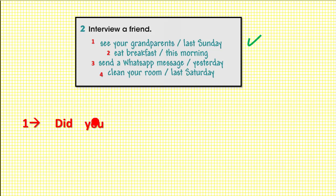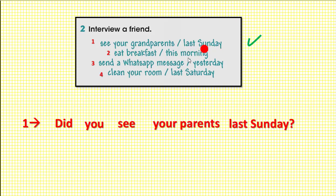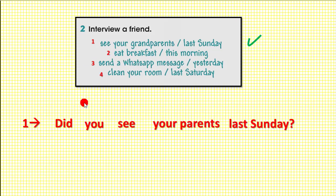Did you see your parents last Sunday? El sujeto 'you', y luego el verbo 'see your parents', y completamos con 'last Sunday.' So the question is: 'Did you see your parents last Sunday?' That's right — this is question number one. Ahora vete y forma preguntas en el pasado con number two, number three, and number four — igualito como hemos hecho en el número uno.